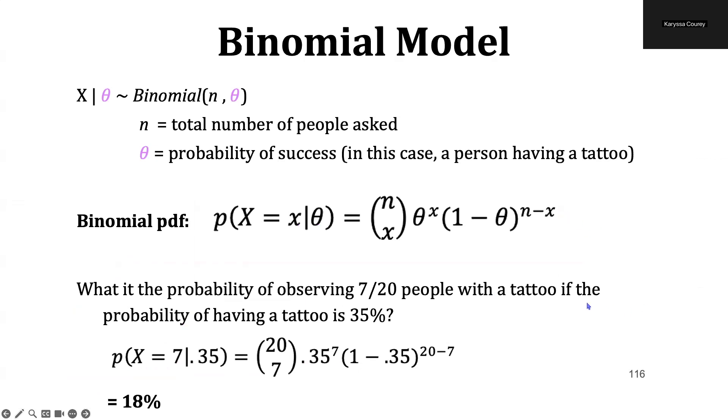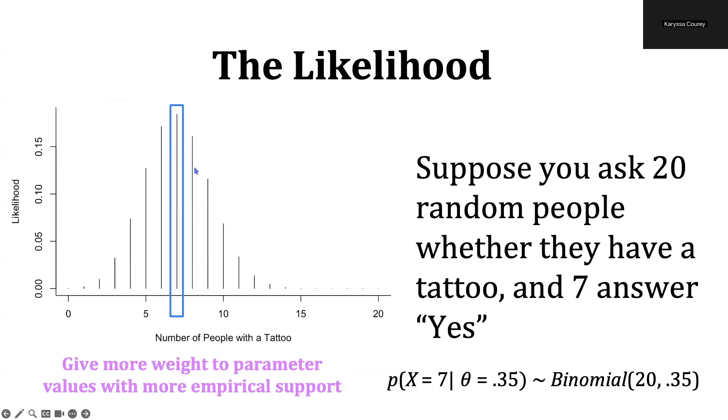And we can actually compute the probability directly. So we looked at this binomial PDF before, and now we have information that we can plug in. So we can simply plug in 7 for x, which would be the number of successes or the number of people with a tattoo, and plug in 0.35 for theta, which would be the population proportion, or in this case, the percentage of people with a tattoo, and we would get about 18%. So if we return to this graph, we can see here that 7 in this box, the likelihood of about 18%.